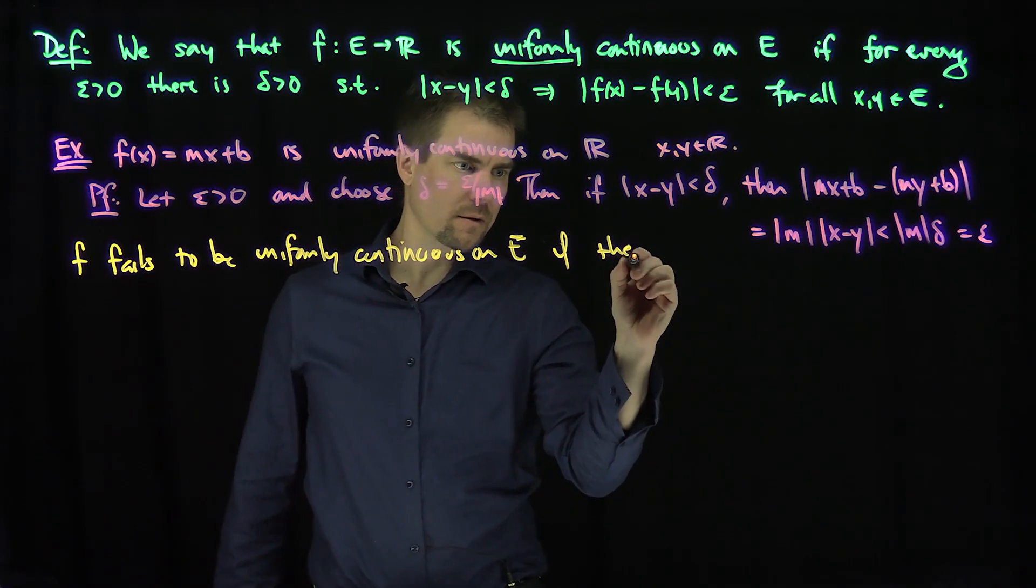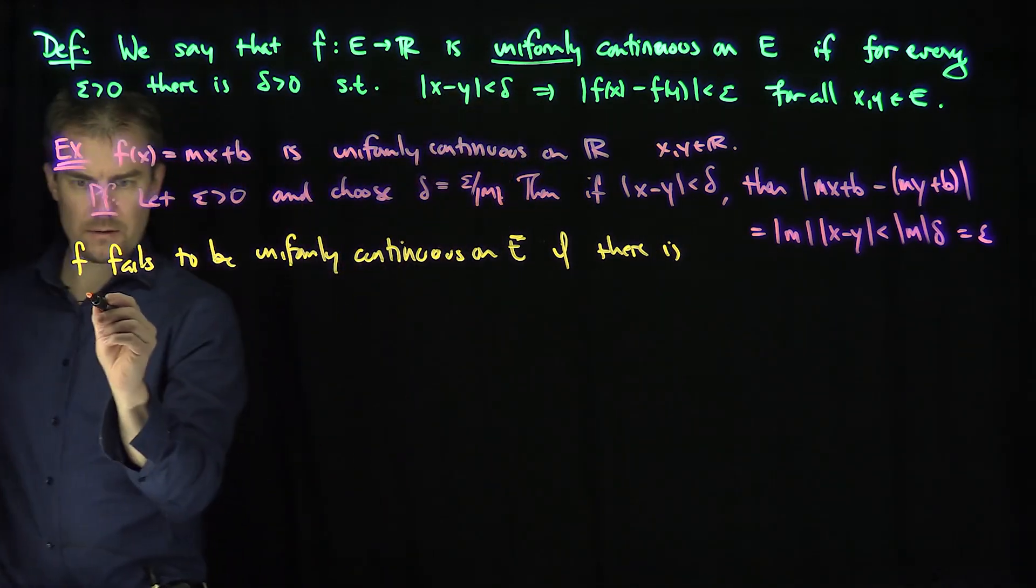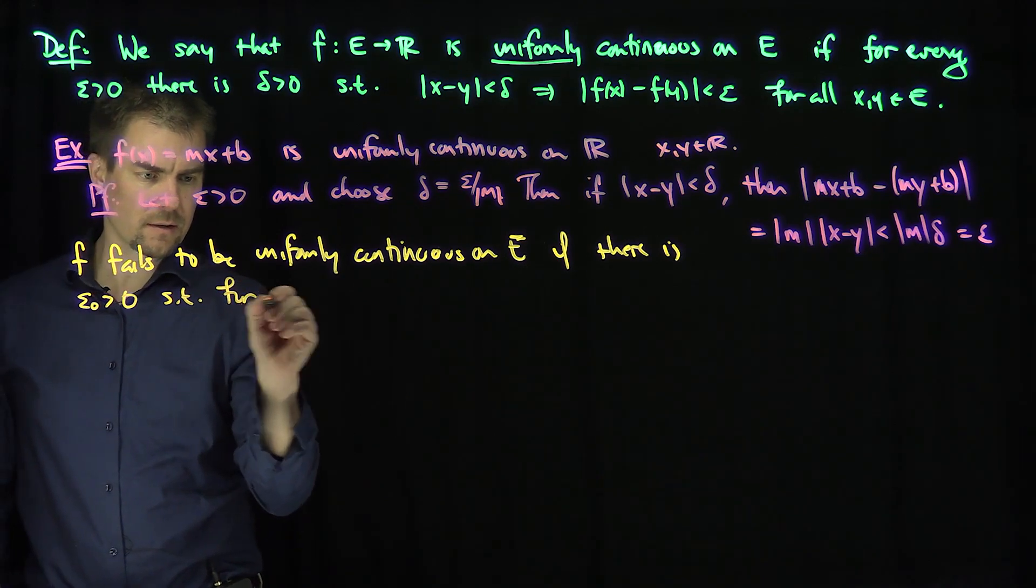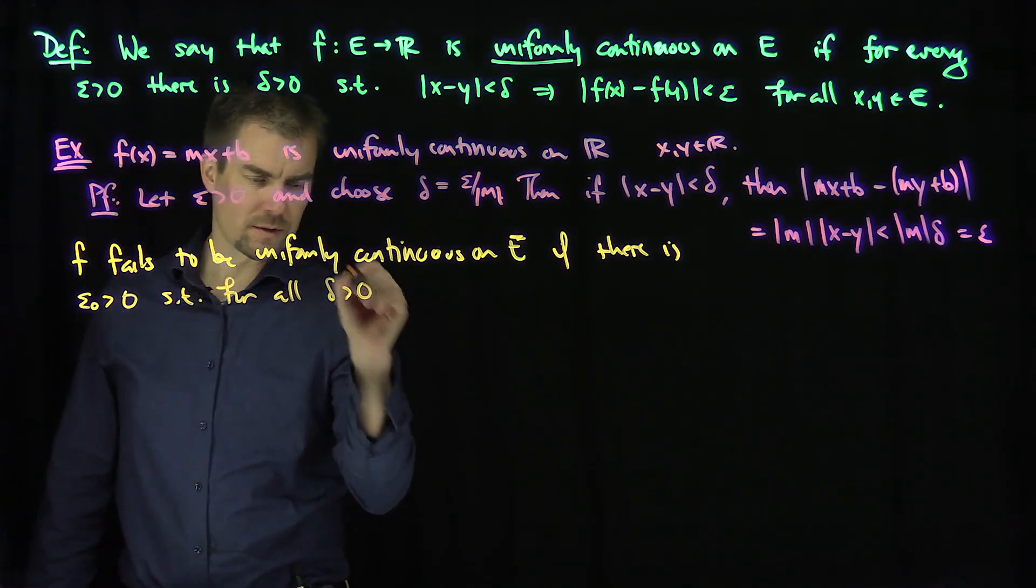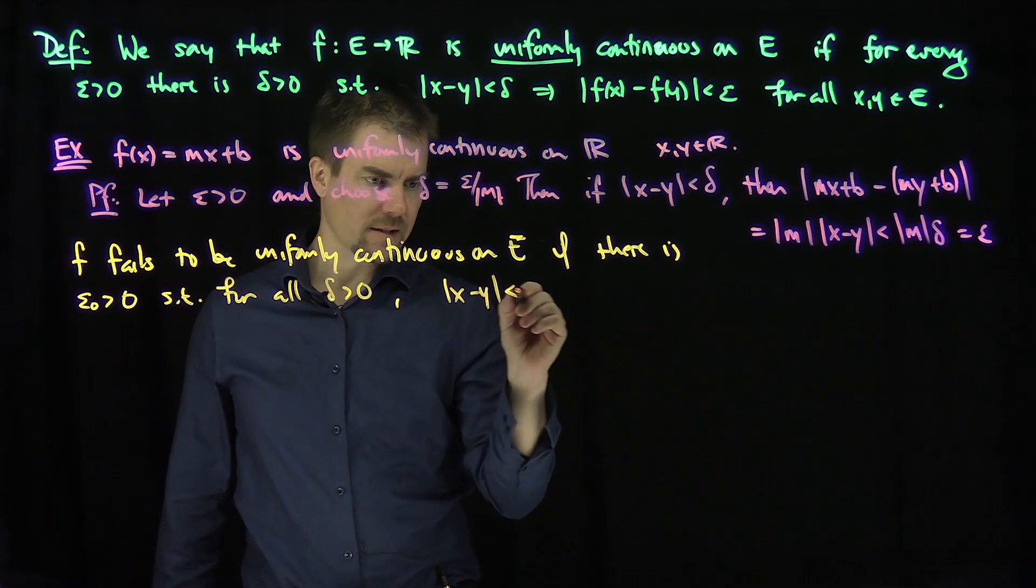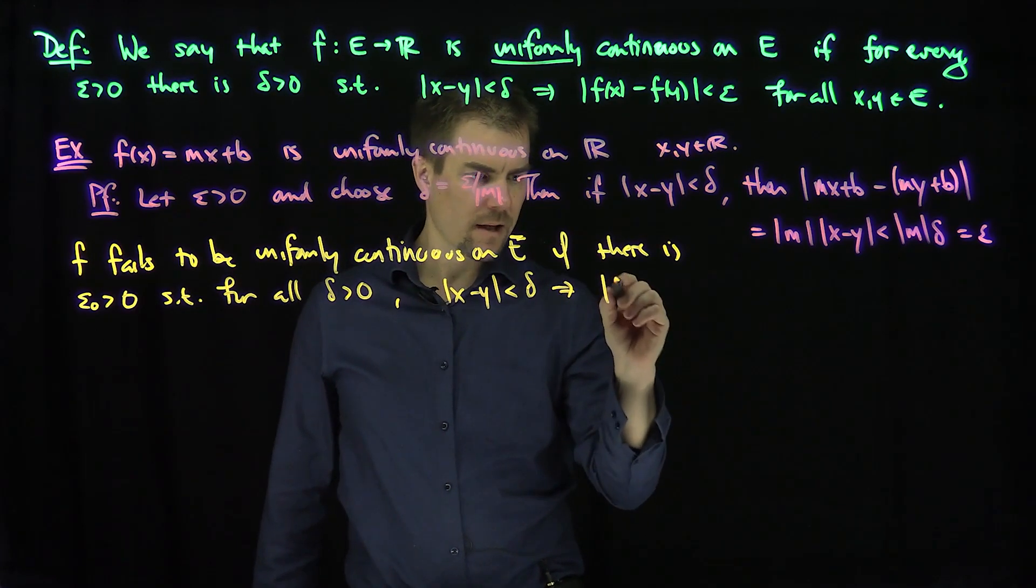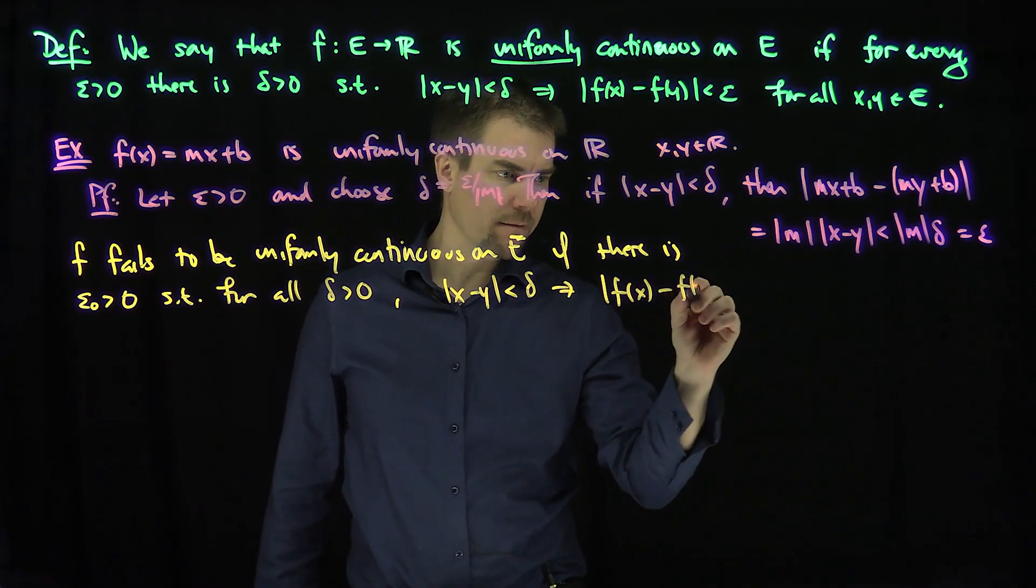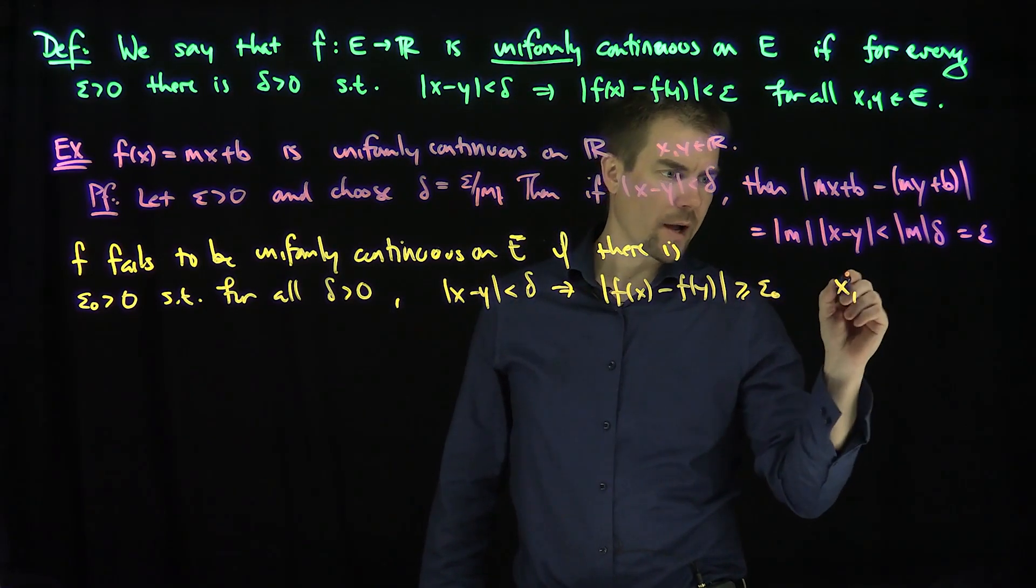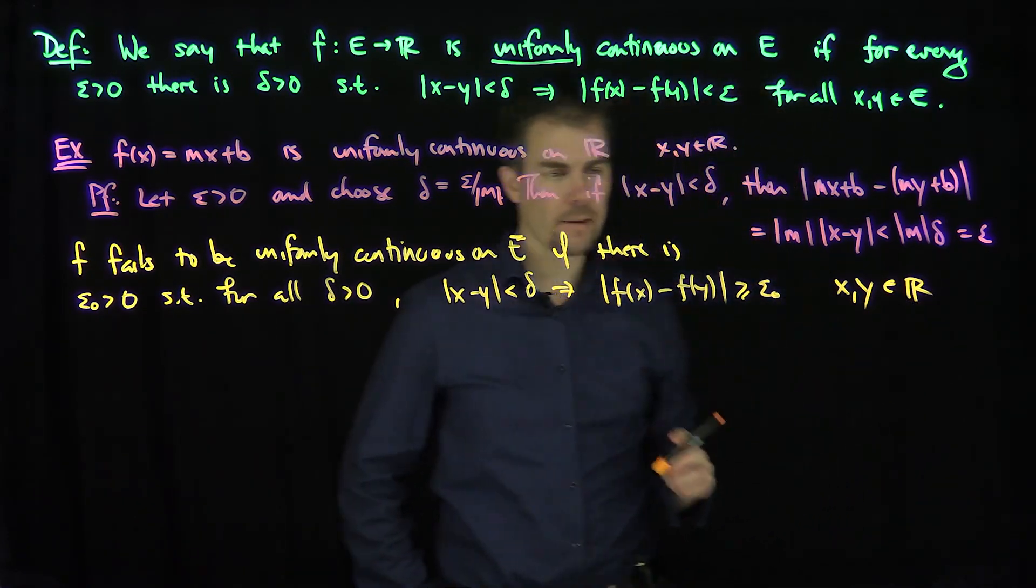if there is epsilon zero greater than zero, such that for all delta greater than zero, we have x minus y less than delta implies that f of x minus f of y is strictly bigger than or equal to this epsilon zero, for some x and y in the set.